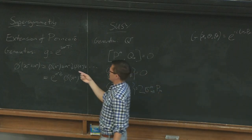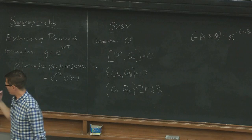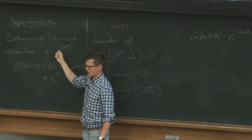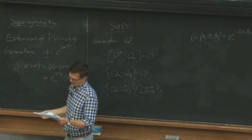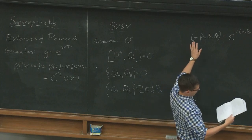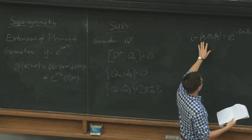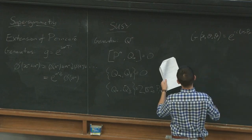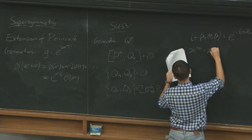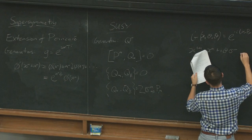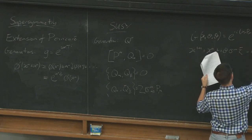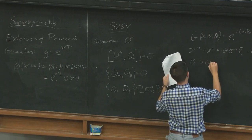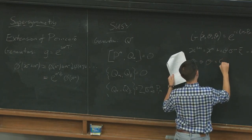Just as fields are functions of spacetime coordinates, super fields are functions of the full superspace coordinates (x, θ, θ̄). A generic superfield F(x, θ, θ̄) can be Taylor expanded in θ and θ̄, and because θ is a Grassmann variable — satisfying θ_α θ_α = 0 — the expansion terminates. The expansion contains: a scalar field, a fermion, another fermion, another scalar, a vector, another fermion, and finally a scalar, corresponding to all the degrees of freedom of a general superfield representation, organized by powers of θ and θ̄.